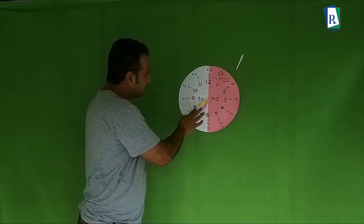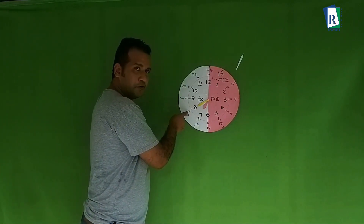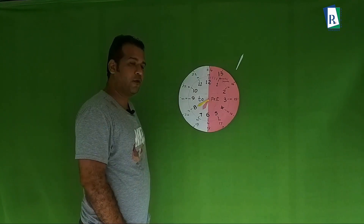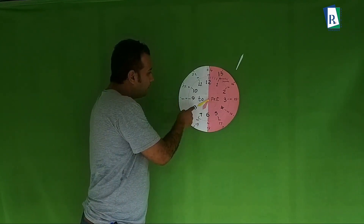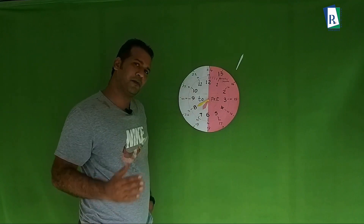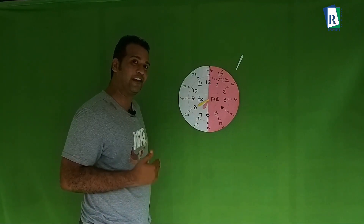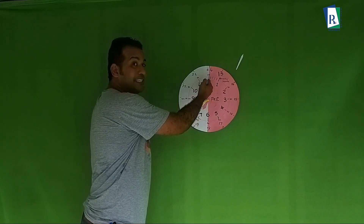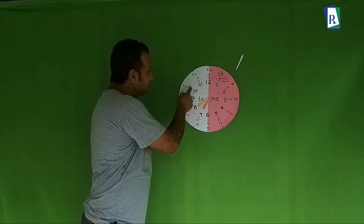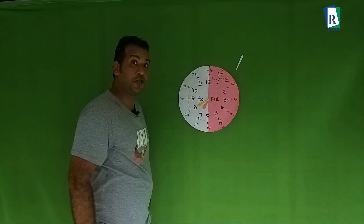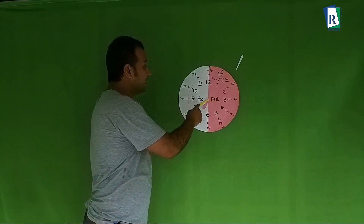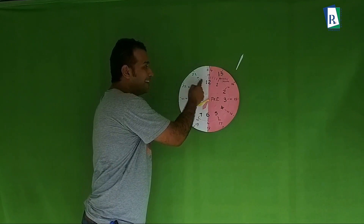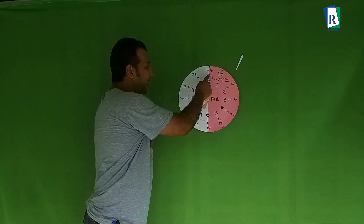Here we don't use 'past'. You know it is 40 minutes, but while reading we are not using it that way. You could say '40 minutes past' but usually we use another way — how many more minutes to reach 12? Five, ten, fifteen, twenty — 20 more minutes to reach 12.